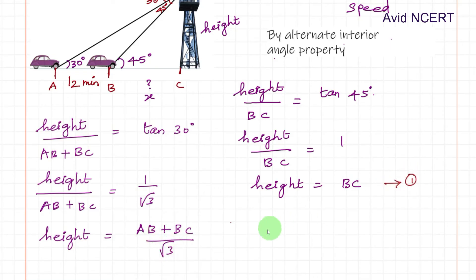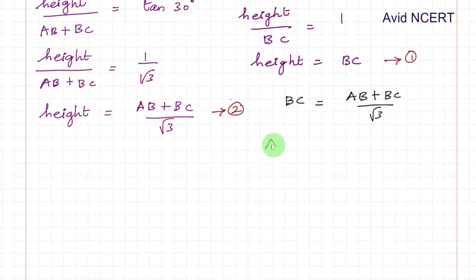By equating this equation and this equation, since both are height and height is same, we can find the value of BC. BC equals AB plus BC divided by root 3, so AB plus BC equals root 3 BC by cross multiplication.